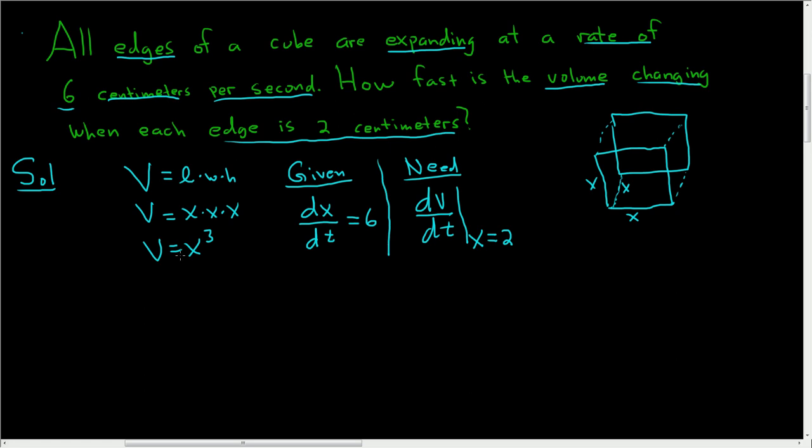All we have to do now is differentiate the volume. So dV/dt, this is 3x squared, and x is a function of time, so we have to multiply by the derivative of x. That's the chain rule. Multiply by the derivative of the inside,